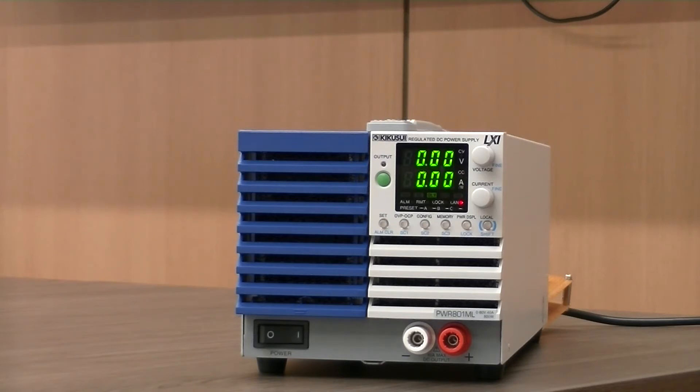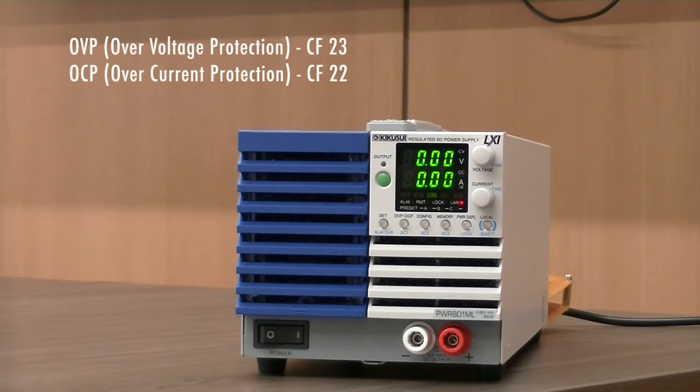As with most programmable power supplies, the PWR01 comes with overvoltage protection as well as overcurrent protection. The current setting limit and voltage setting limit can be easily set from config 22 and 23 respectively.